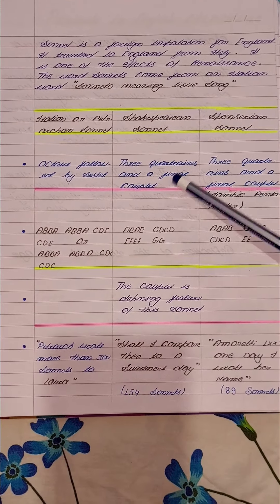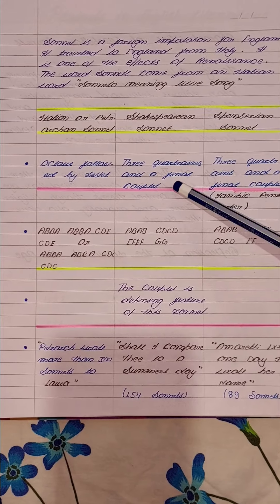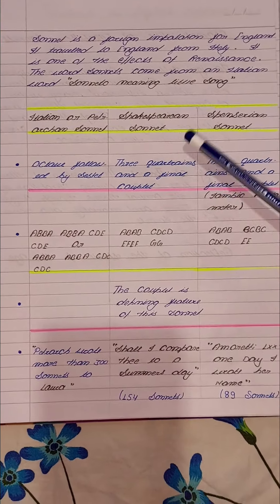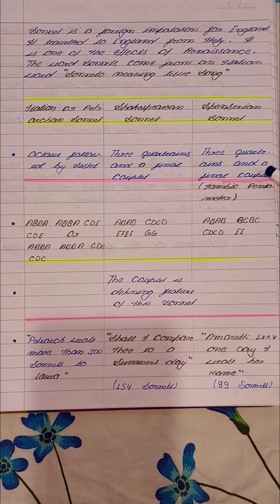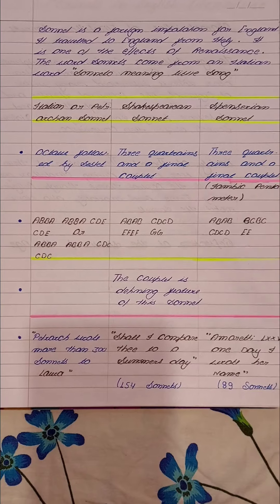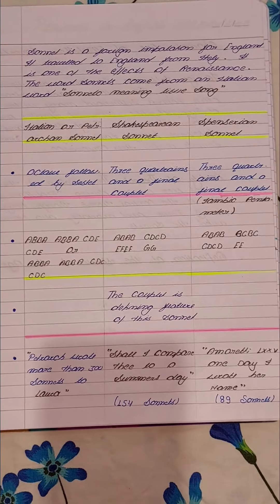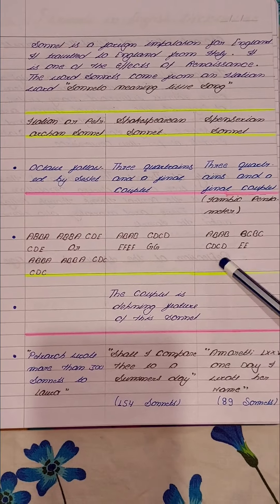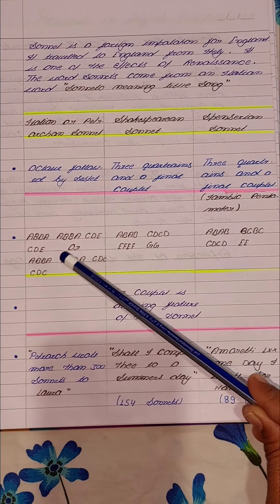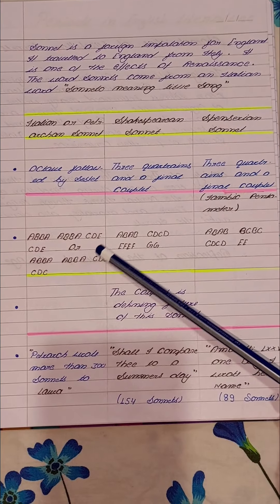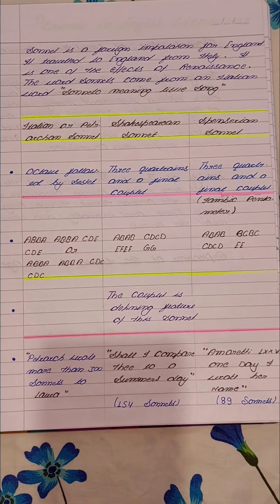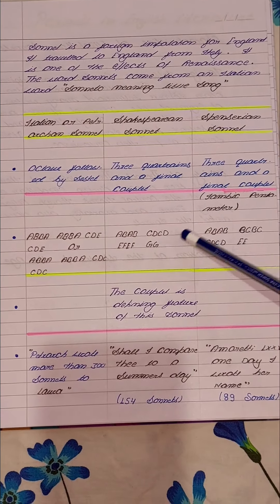Shakespeare's sonnets were written in three quatrains followed by a couplet — that is, 4-4-4-2, totaling 14 lines — and written in iambic pentameter. Now, the major differences you will find in the sonnets are in their rhyming schemes. Petrarch's rhyming scheme was ABBA ABBA CDE CDE, or alternatively ABBA ABBA CDC CDC.